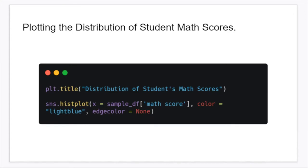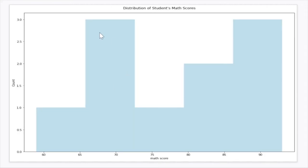So the first thing we want to do is to plot the distribution of student math scores. I put the title as 'Distribution of Student Math Scores', and then I'm going to use seaborn's histplot — the histogram plot — and we're going to set x equal to sample data frame math score, basically the values of that column. Then we're going to set the color of the histogram to light blue, and the edge color — the border of each box — we're going to set that equal to none, because I don't want there to be any borders. This is what the graph ends up looking like.